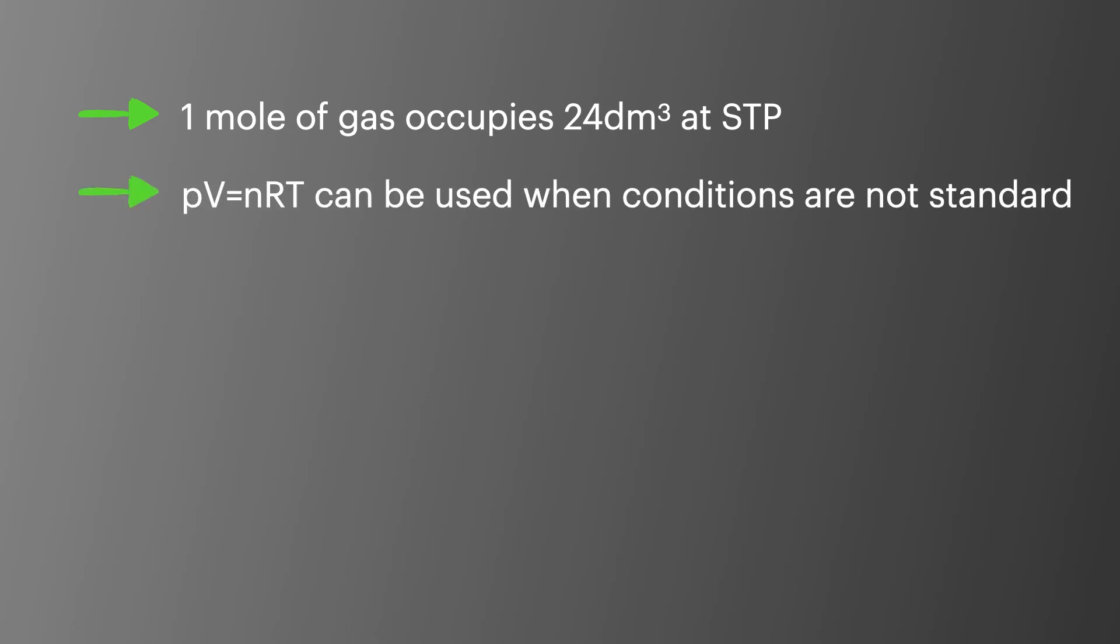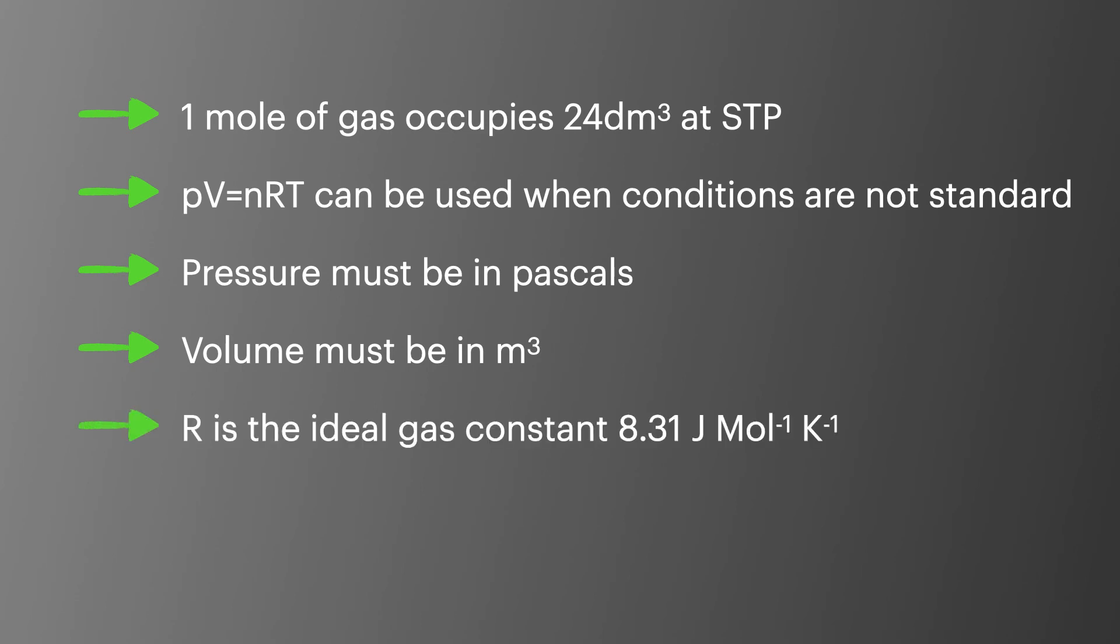So to summarize what we've learned about the ideal gas equation then. One mole of gas will always occupy 24 decimeters cubed at standard temperature and pressure. This is a real quick one for multiple choice questions and short answer questions. PV equals nRT can be used when conditions are not standard. Pressure must always be in pascals. Volume must always be in meters cubed. R is the ideal gas constant, and it's 8.31 joules per mole per Kelvin. And temperature must always be in Kelvin.